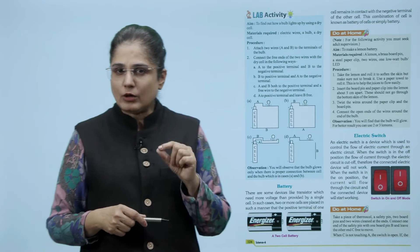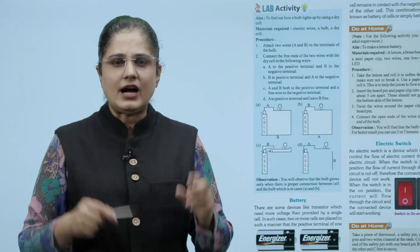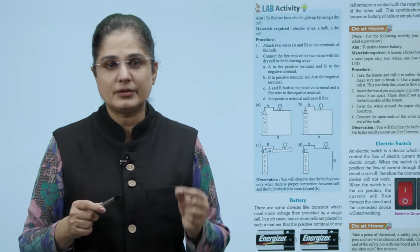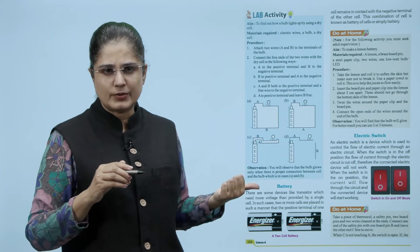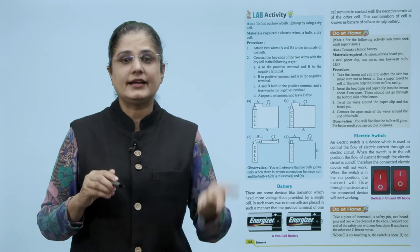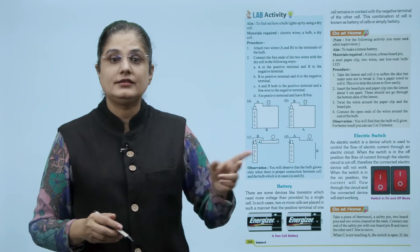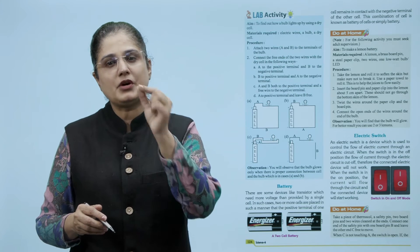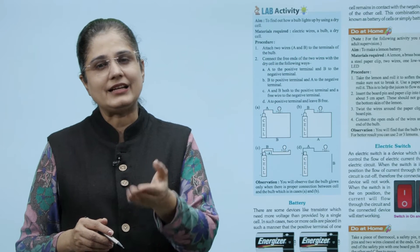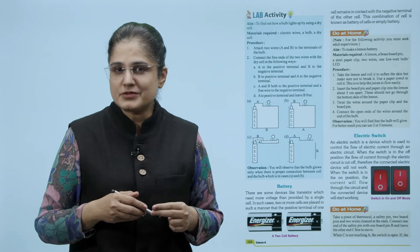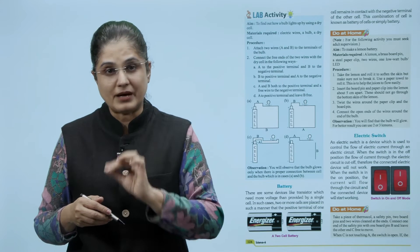Now to find out how a bulb lights up by using a dry cell you require electric wires, a bulb and a dry cell. Attach two wires A and B to the terminals of the bulb. Connect the free end of the two wires with the dry cell in the following ways: in the first way A to the positive terminal and B to the negative terminal, then B to a positive terminal and A to the negative terminal. In the third case, A and B both to the positive terminal and leave B free. Now what you will observe is that the bulb glows only when there is proper connection between the cell and the bulb which is in the cases of A and B.